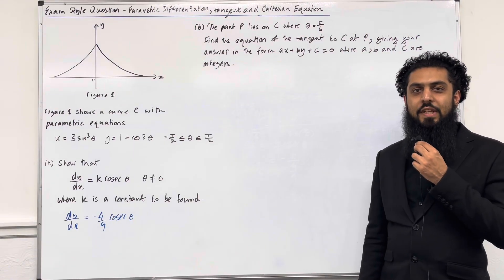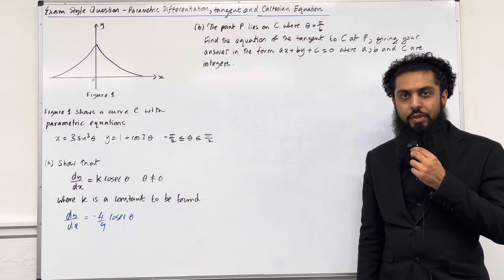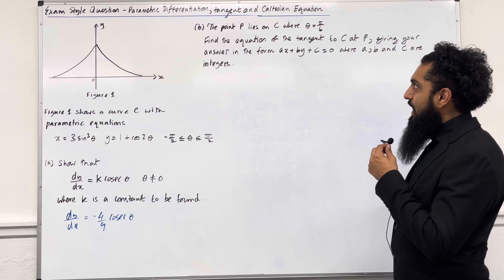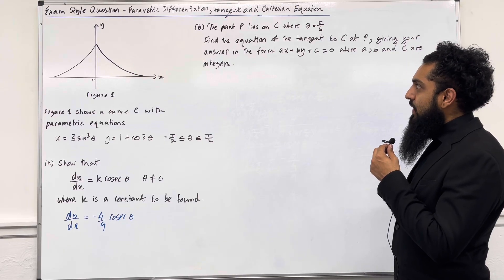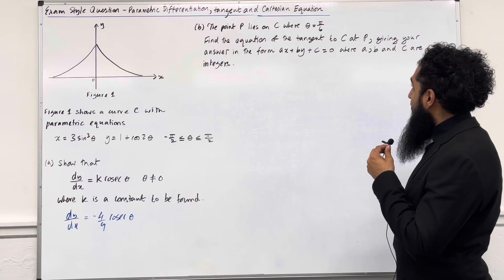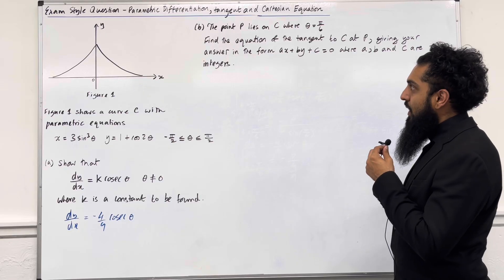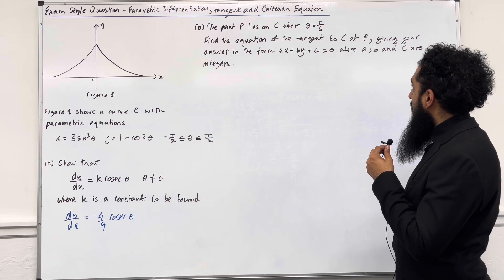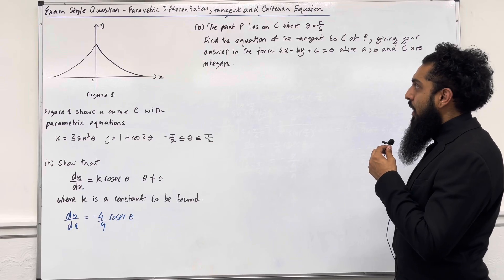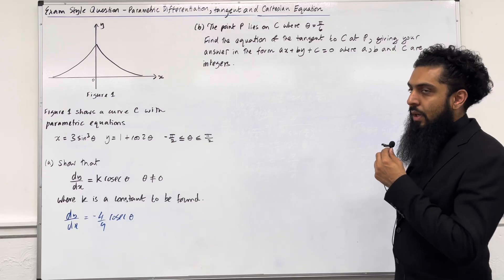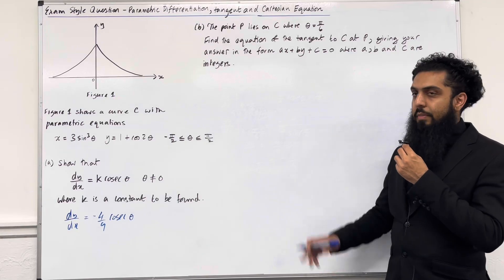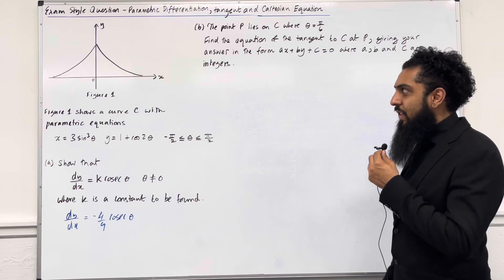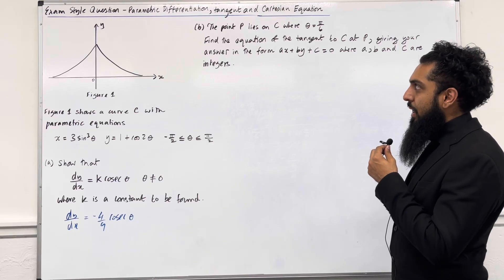Moving on to part B. The point P lies on C where theta is equal to pi over 6. Find the equation of the tangent to C at P, giving your answer in the form Ax plus By plus C equal to 0, where A, B and C are integers. Please pause the video, have a go at part B, and then play the video. Let's have a look at the solution to part B.